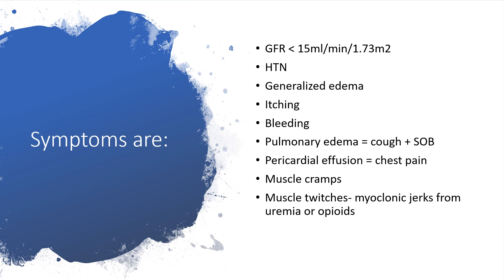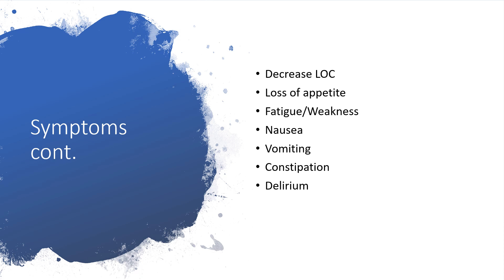Possible symptoms include a glomerular filtration rate dropping to between 10 and 15 ml per minute per 1.73 m², or even lower than 15. Symptoms include elevated blood pressure, generalized edema (anasarca), itching, bleeding, pulmonary edema leading to cough and shortness of breath, pericardial effusion causing chest pain, muscle cramps, muscle twitches or myoclonus, decreased level of consciousness, loss of appetite, fatigue, weakness, nausea, vomiting, constipation, and delirium.